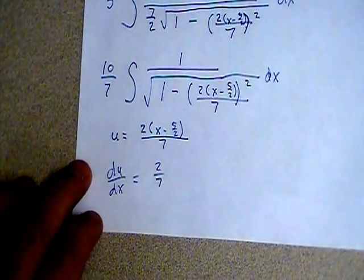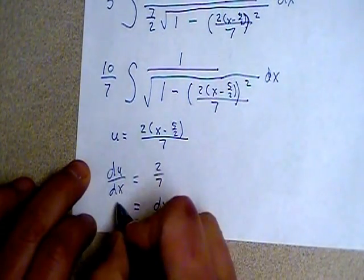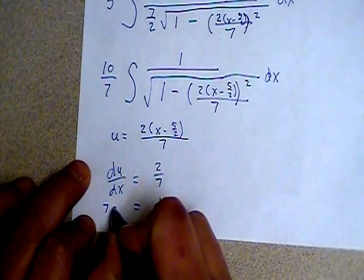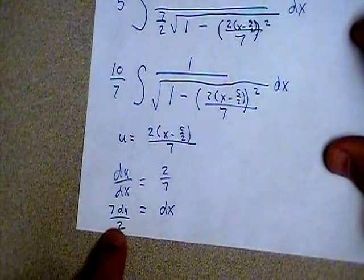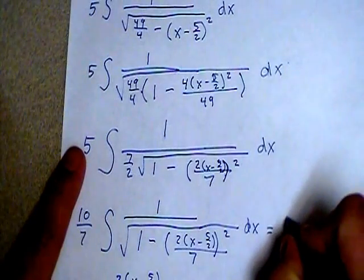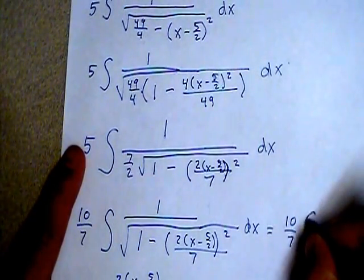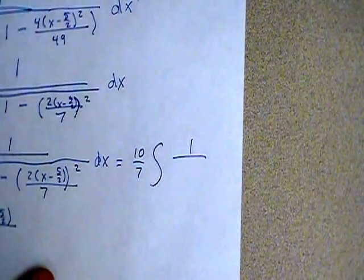And so what I'm going to replace the dx with is going to be, if I multiply each side by dx, divide each side by 2 sevenths, I'm going to be able to replace the dx with this. So if I bring this line across here, I have the 10 sevenths out in front already, 1 in the numerator, sorry I'm off the screen there, 1 in the numerator.